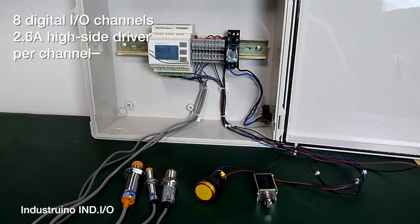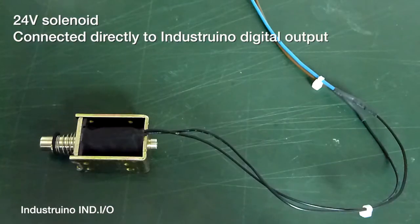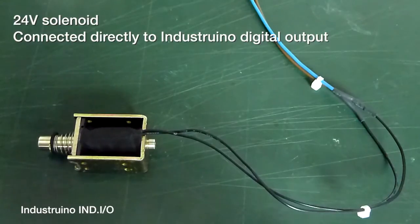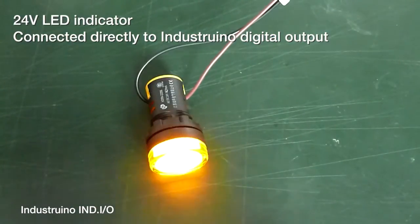The connected loads can be anything ranging from halogen lamps, relays, motors or solenoids. In this example we have connected a 24V solenoid valve to one of the channels and 24V LED indicator light on another channel.